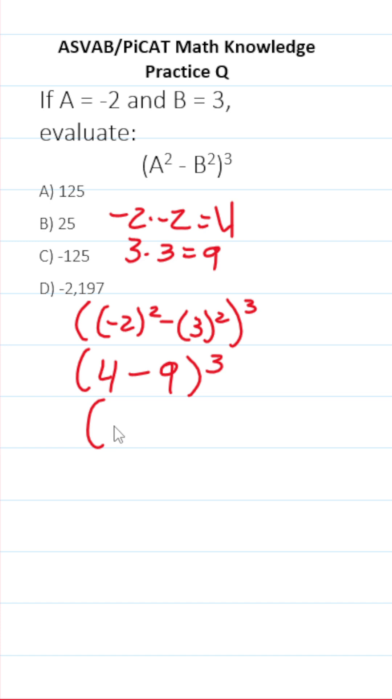4 minus 9 is negative 5, so this is (-5)³. That's the same thing as negative 5 times negative 5 times negative 5. Let's work this out.